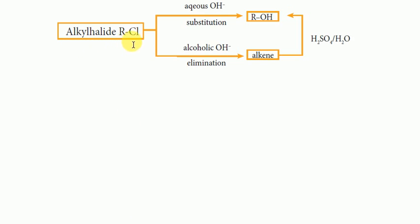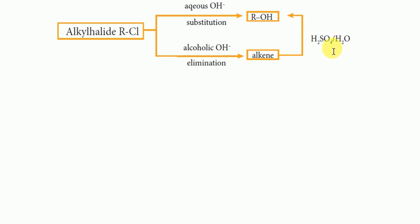Alkyl halide interconversion: an alkyl halide can undergo OH substitution to give an alcohol. An alkyl halide can also be converted into an alkene through elimination. These are further examples of functional group interconversion — alkyl halide converting to alcohol or alkene.